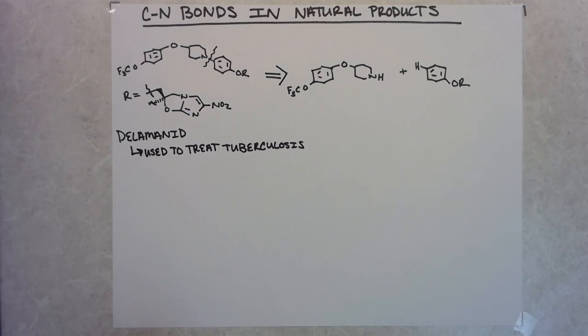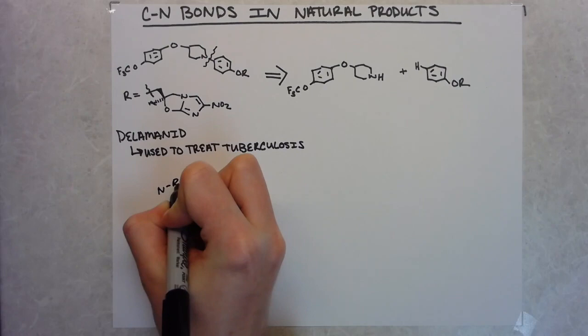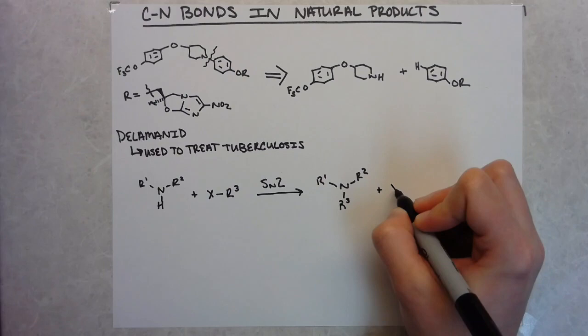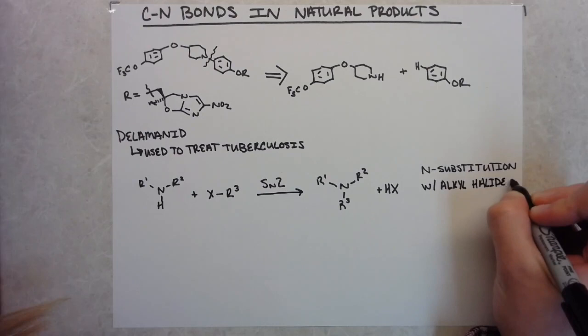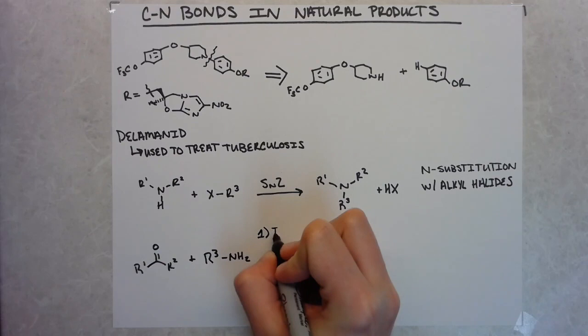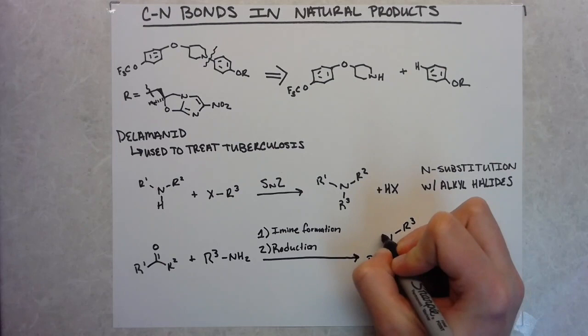And looking closer at each of these carbon nitrogen bond forming reactions used in medicinal chemistry, they broke down this category further into specific reactions. They found that N substitution with alkyl halides accounted for about 5% of all reactions performed in medicinal chemistry, and another 5% were reductive amination reactions. So overall, 10% of the reactions performed in medicinal chemistry are reactions that Leonori now provides a new method of doing in his paper.